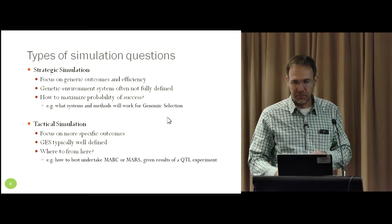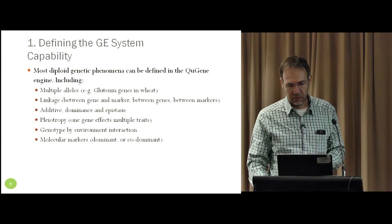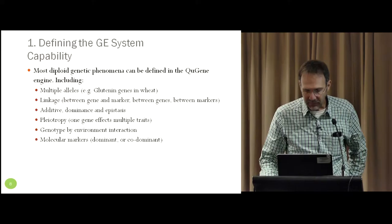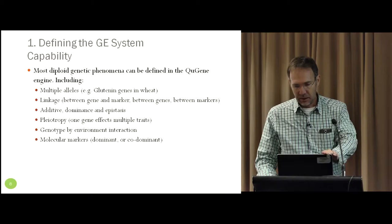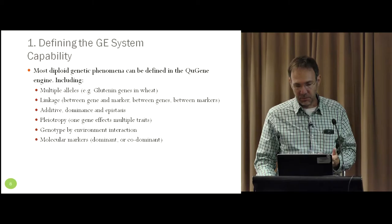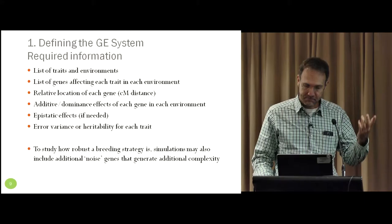Or if you want to use it tactically, you might have a specific gene you're trying to introgress or utilize and you want to work out how to use that. So I'll just summarize what it does: it's diploid and it can do multiple alleles, it can do wheat because those 21 chromosomes are reasonably independent. It's not very good with things like sugar cane. You define additive dominance and epistasis effects, you can handle pleiotropy and G by E and you can put markers into the system.